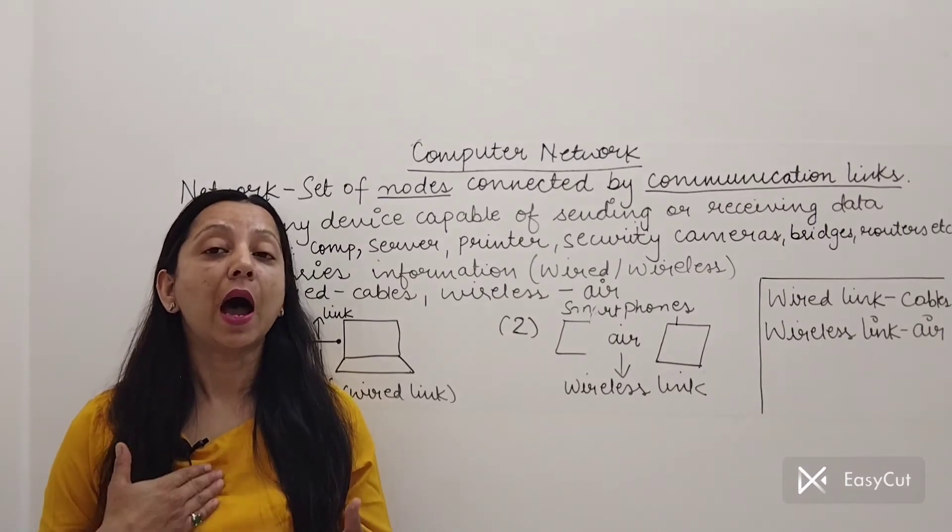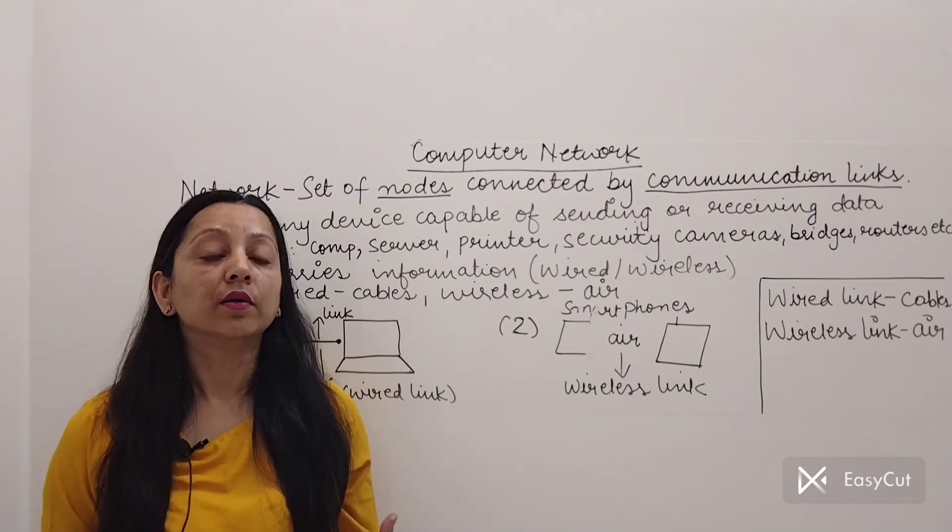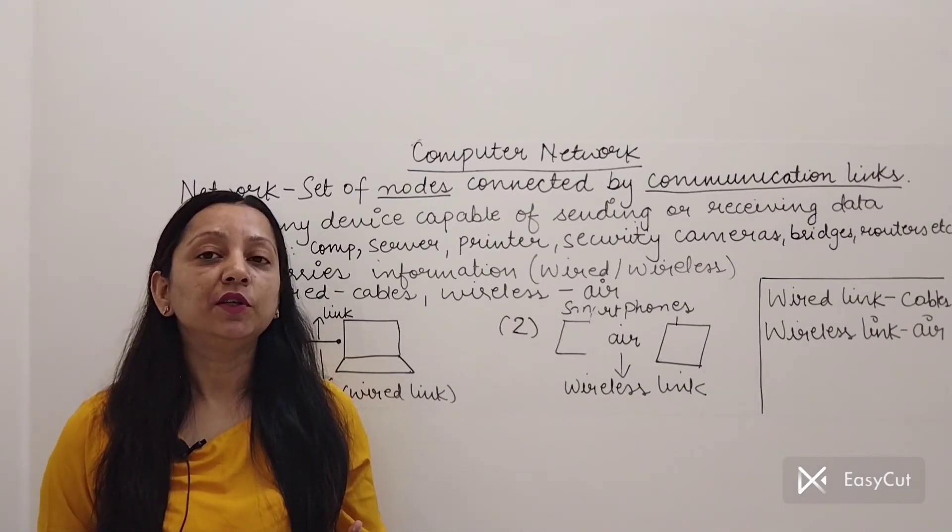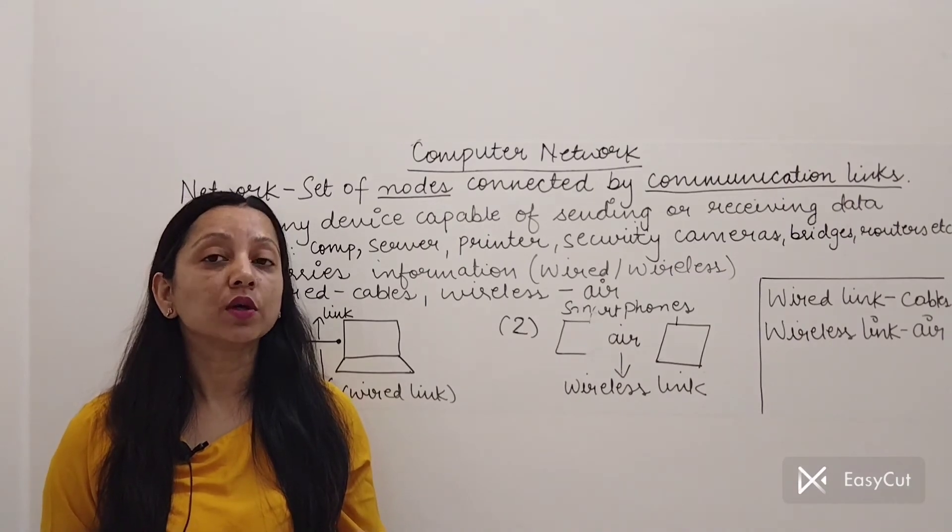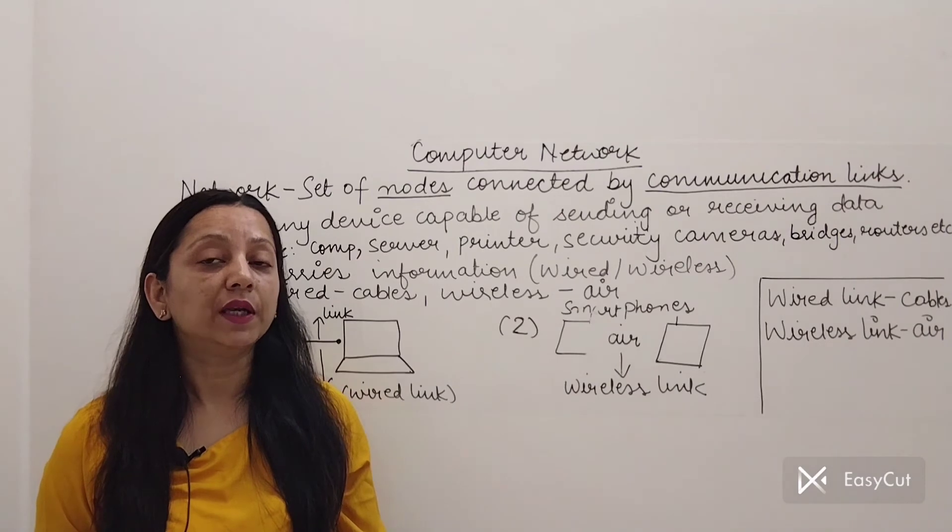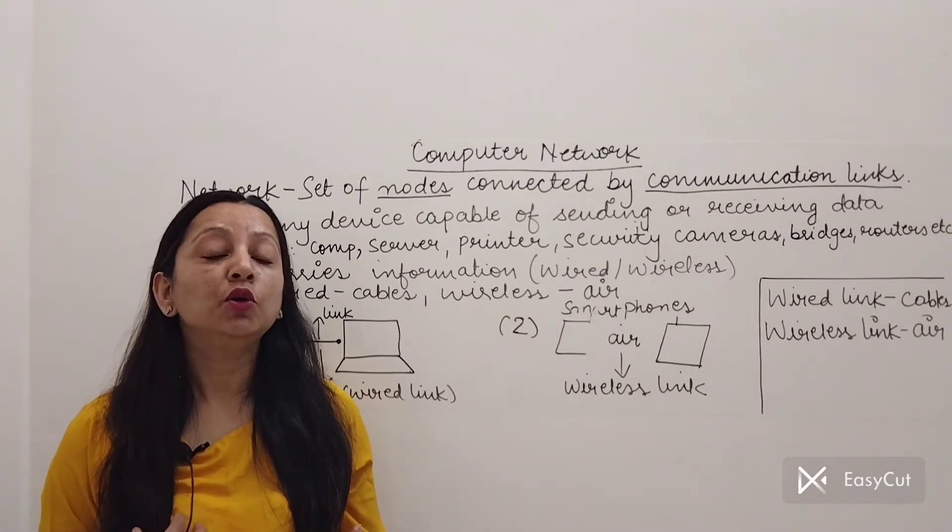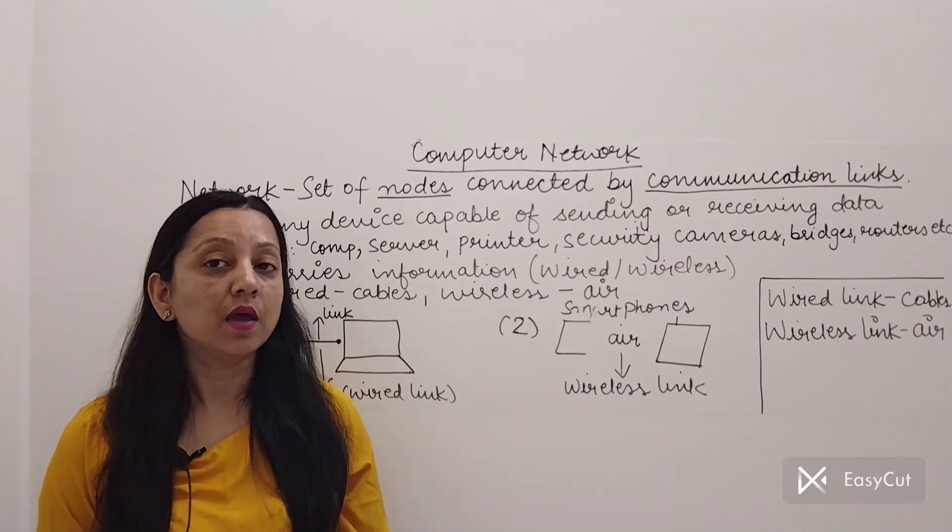Like right now, I am communicating with you all through air. You are receiving my video through air. There is no wire between your smartphone and my smartphone. That means how are we connected? Through air. So you are receiving my information through air.